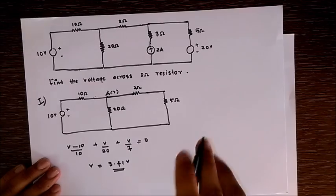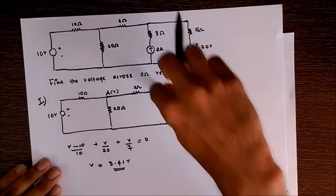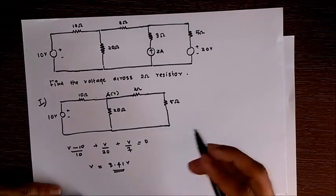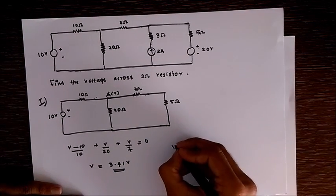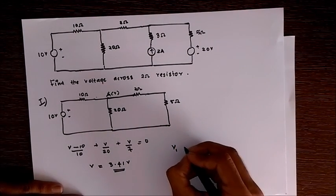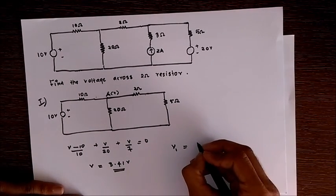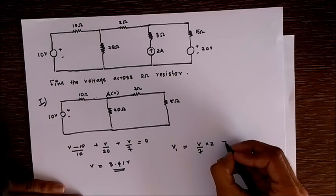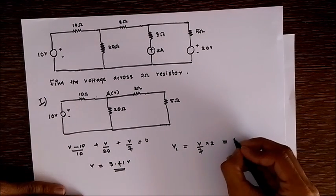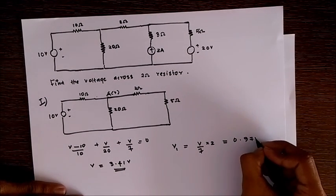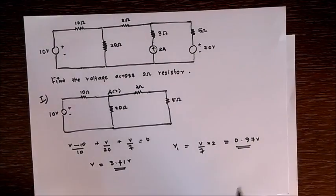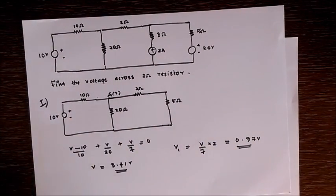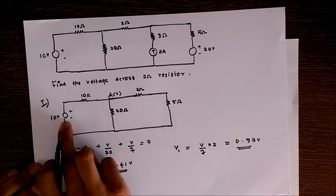Now to find out the voltage drop across 2 ohm resistor, this voltage is 3.41. So I have voltage divider rule. V1 equals V by 7 into 2, which equals 0.97 volts. So now we got the voltage drop across 2 ohm resistor with respect to the 10 volt source.